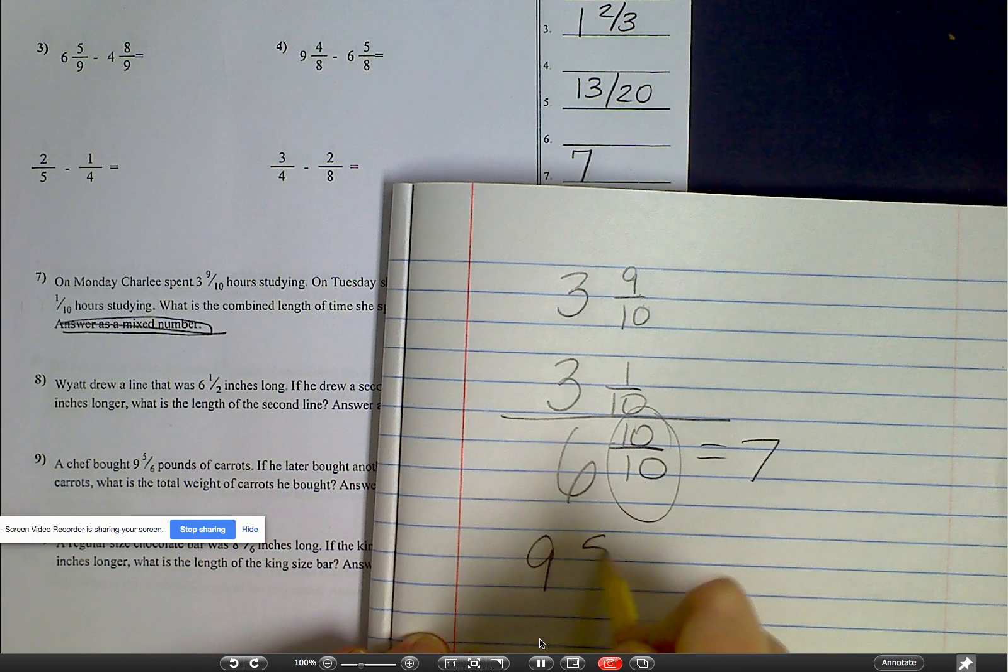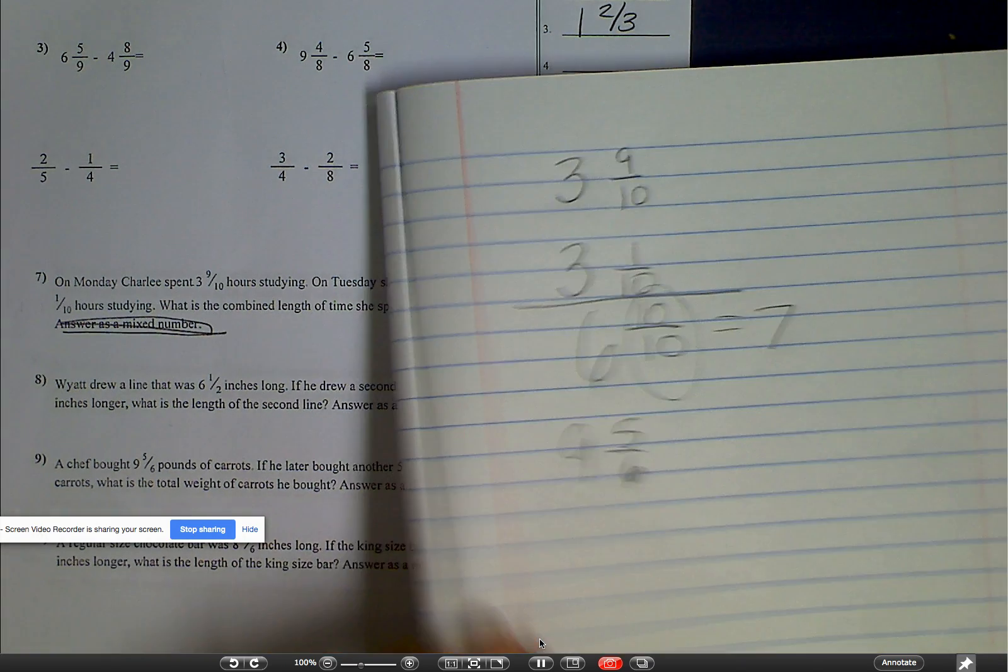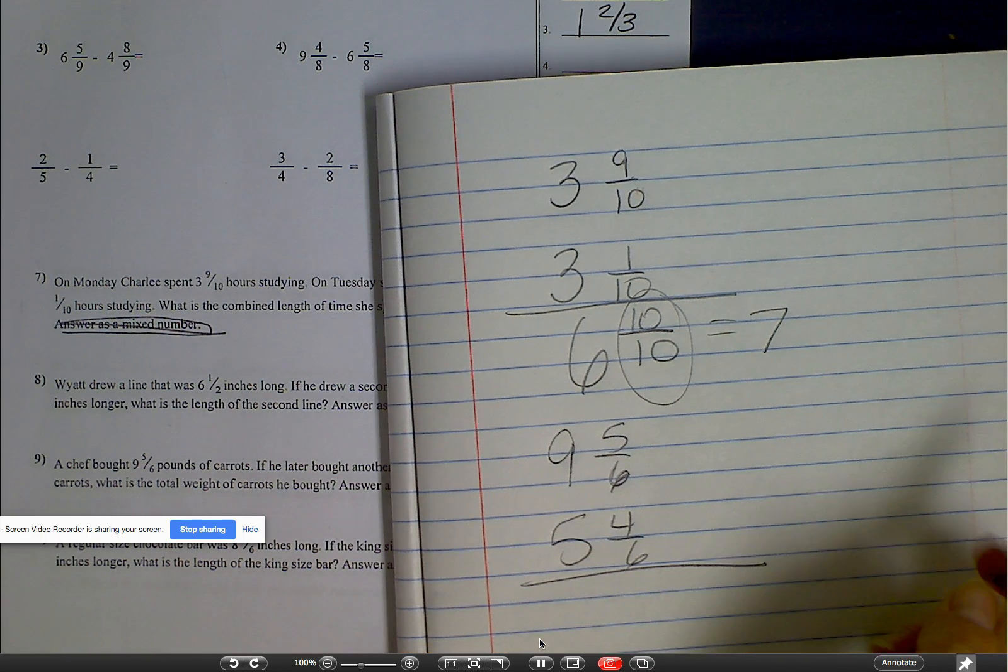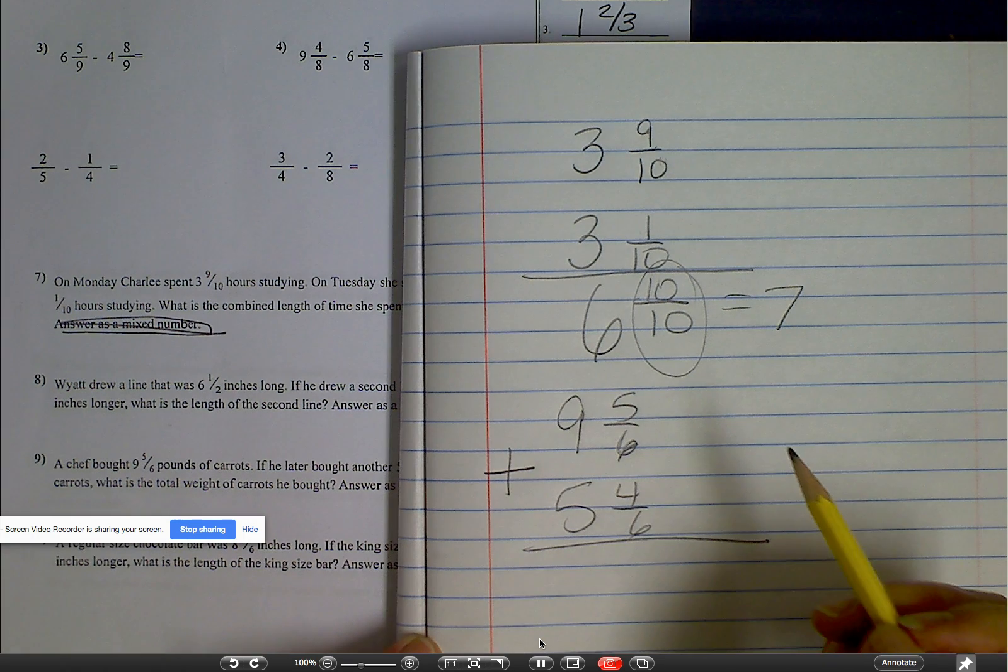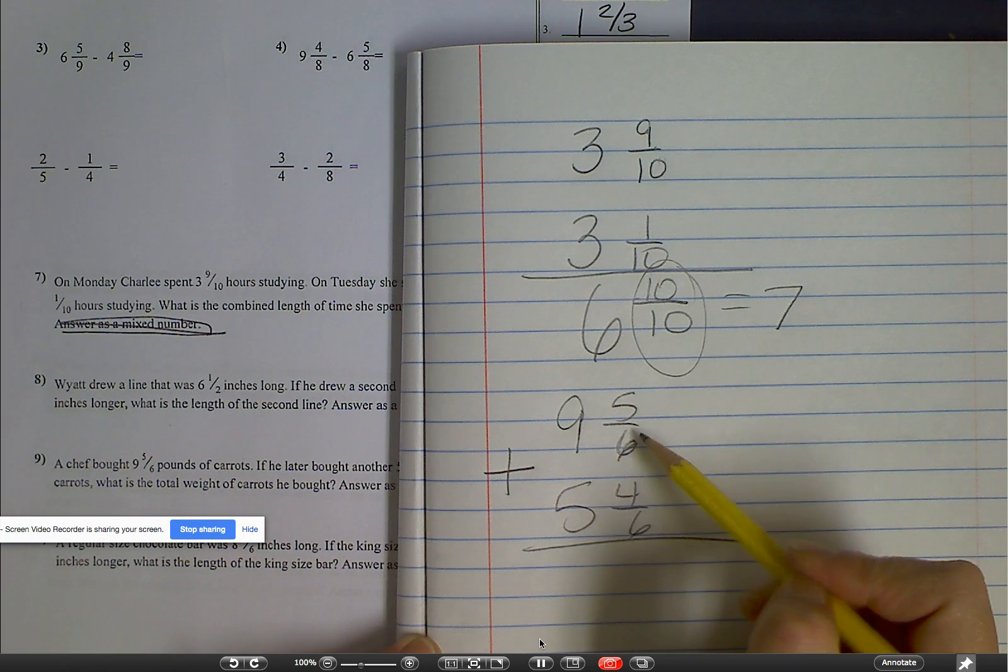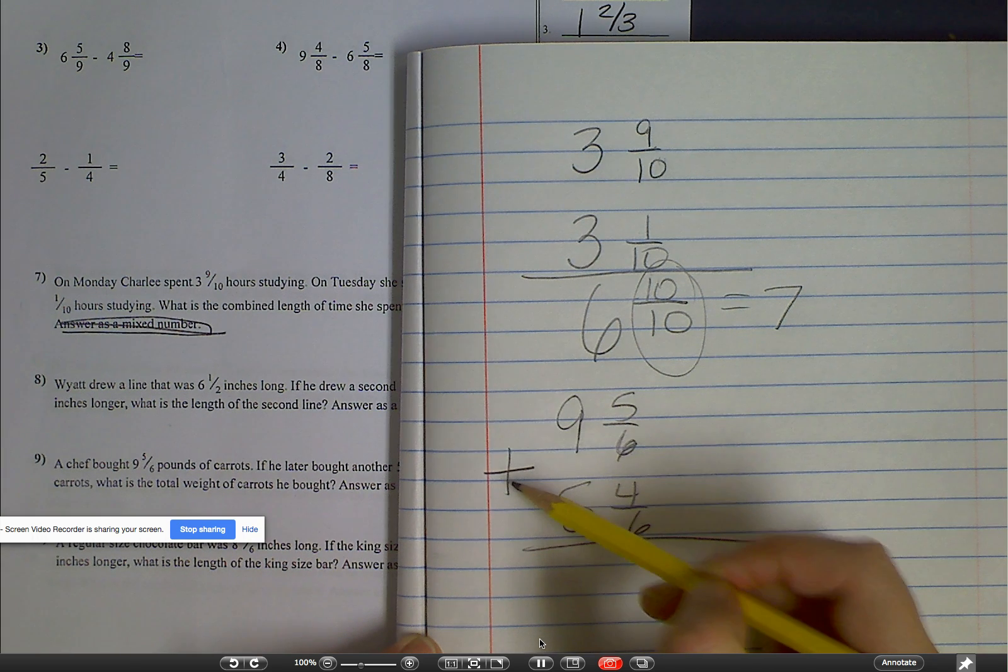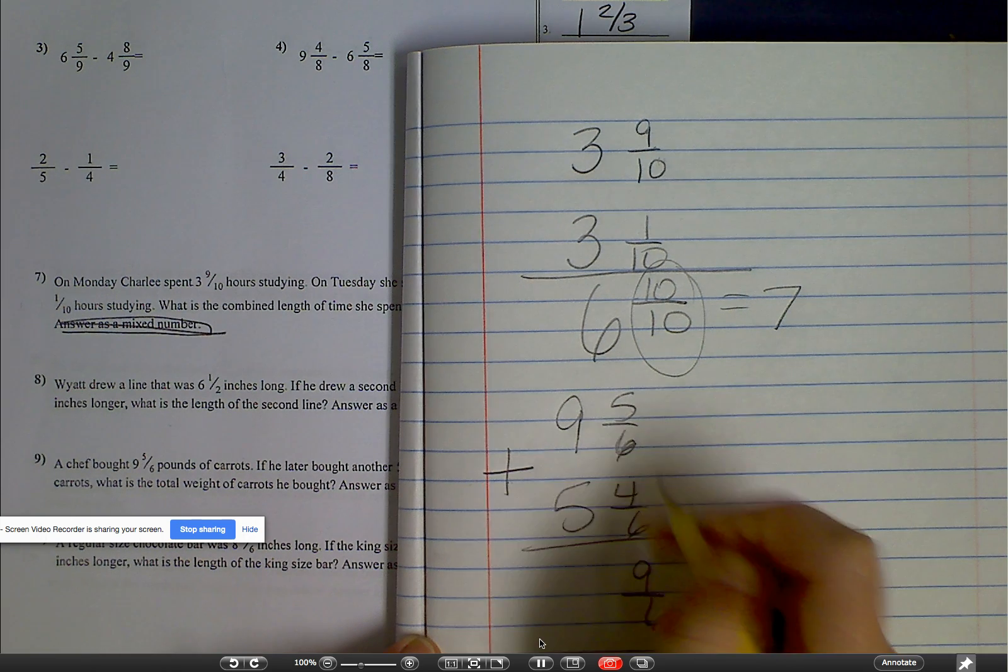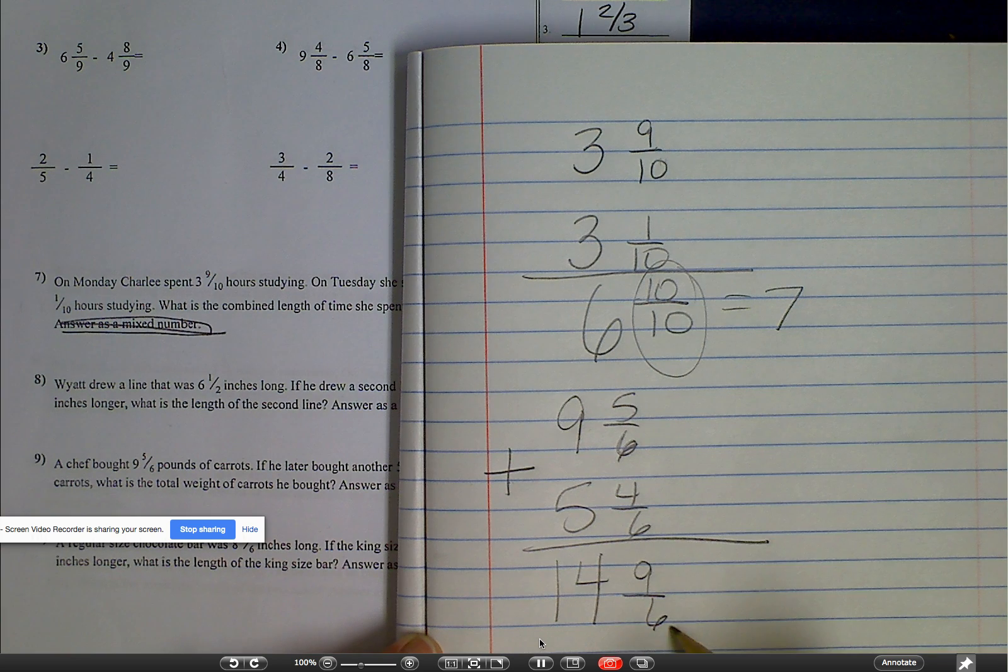So he bought nine and five-sixths pounds. And then he bought another five and four-sixths pounds. So, oh, this is a good one. So we want to find out how much he actually bought. So they have the same denominator. So I can go ahead with my addition. So five plus four is nine over six. And then nine plus five is 14. What is wrong with this?